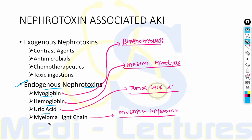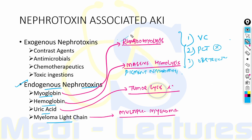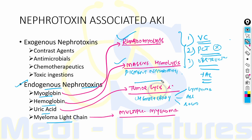Endogenous nephrotoxins include myoglobin, hemoglobin, uric acid, and myeloma light chains. Myoglobin is released by injured muscle cells during rhabdomyolysis from traumatic crush injury, muscle ischemia, compression during coma, excessive exercise, heat stroke, malignant hyperthermia, and myopathies. Hemoglobin release occurs in massive hemolysis leading to pigment nephropathy. The mechanism by which myoglobin and hemoglobin cause AKI includes intrarenal vasoconstriction, direct proximal convoluted tubular injury, and mechanical obstruction due to precipitation with Tamm-Horsfall protein (uromodulin), the most common protein in urine produced by the thick ascending loop of Henle.